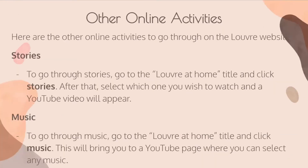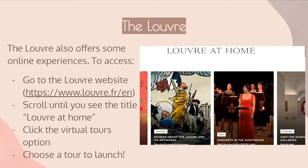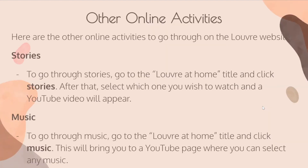Some other online activities you can do on the Louvre website are stories. On the same Louvre at Home page, you can find stories and pick one to watch a YouTube video describing it — it's like the auditorium at a museum. You can also pick a music option, which lets you select various kinds of music that they would exhibit at the Louvre.